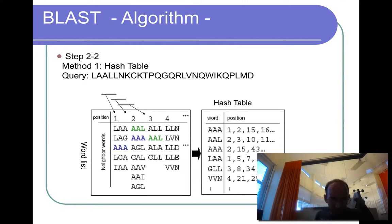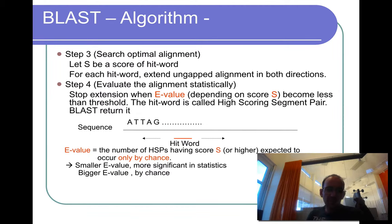So here you use a hash table similar as before. You find, okay, we have neighborhoods LAA and AAL and ALL, and you find LAA is found in position 1, 5, 7, etc. And the data can be millions of residues long.